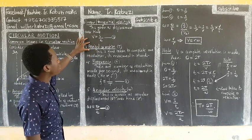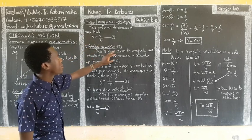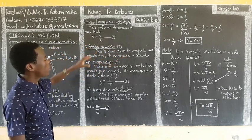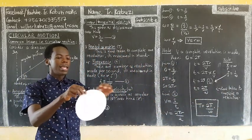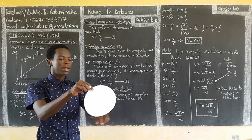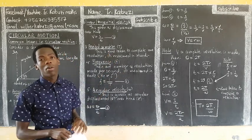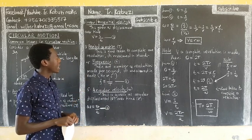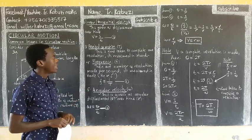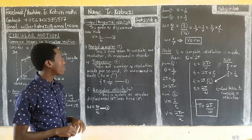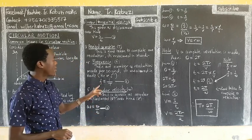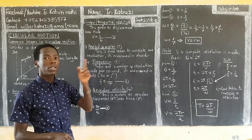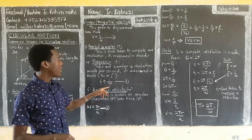The period of motion T is the time taken to complete one revolution. One revolution means you start from a point and return to it — the time for that complete revolution is the period, measured in seconds. Frequency is the number of revolutions per second, measured in hertz. Frequency is given as one over the period T, because the period is the time for one complete revolution.